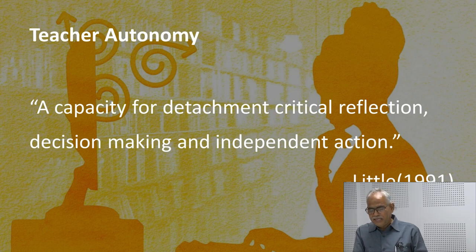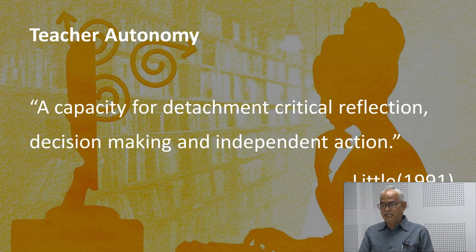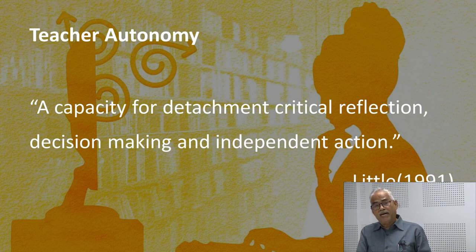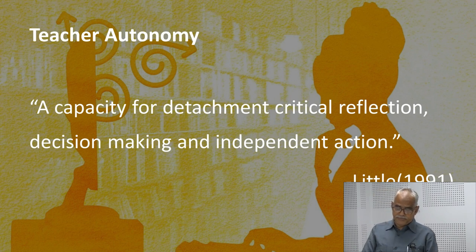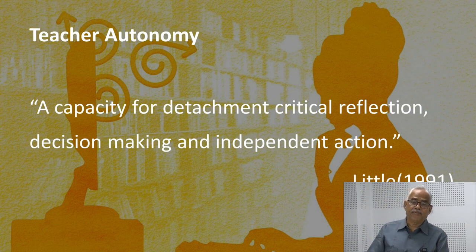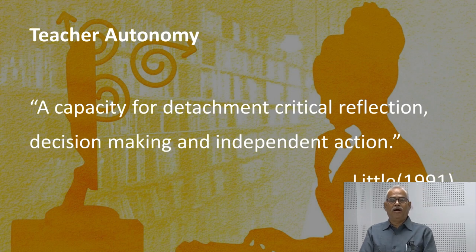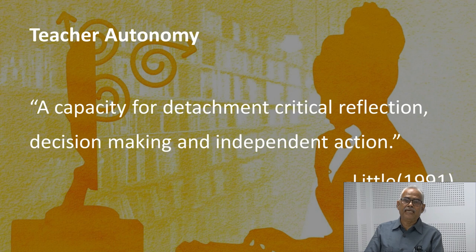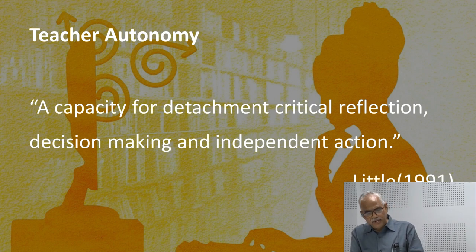Teacher autonomy is defined as a capacity for detachment, critical reflection, decision-making, and independent action. It means we do not depend on others for our action and decision-making. This is based on our capabilities for reflecting on our own abilities and empowering ourselves to take independent decisions. So when we talk about teacher autonomy, we are talking about an autonomous teacher — so what is its meaning?